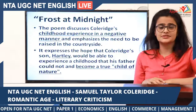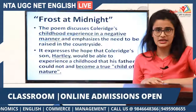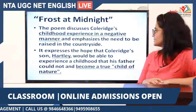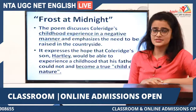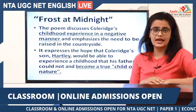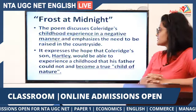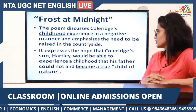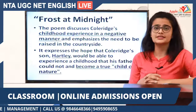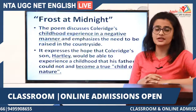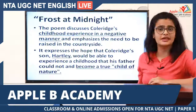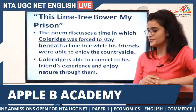Frost at Midnight discusses Coleridge's childhood in a negative manner, as he never had a positive childhood. Since he could not be raised in the countryside, he wants his son Hartley to be raised close to nature so he can have a peaceful and harmonious life. The poem expresses the hope that Hartley would experience the childhood his father could not and become a true child of nature.